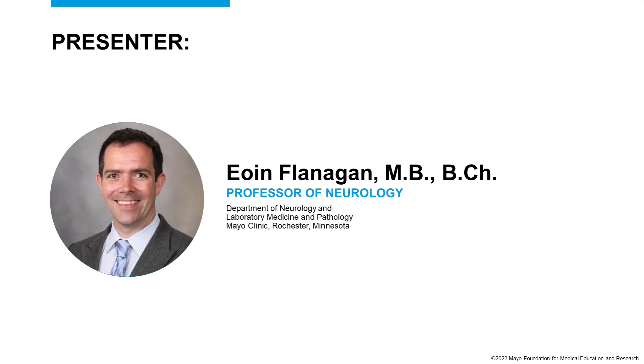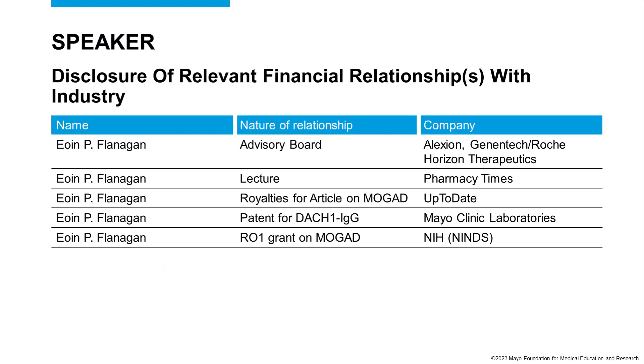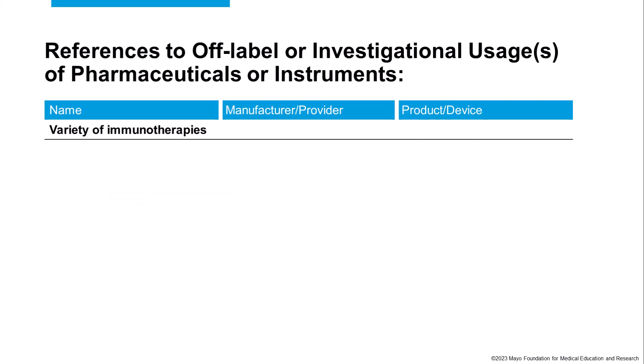Hello everybody. My name is Owen Flanagan. I'm a neurologist at the Mayo Clinic. I work in the Neuroimunology Laboratory at the Mayo Clinic and the Autoimmune Neurology and Multiple Sclerosis Clinics. Today, I'm going to talk about MOG antibody-associated disease, or MOGAD, and in particular about the recent diagnostic criteria. These are my disclosures, which are not too relevant to this talk, which will focus mostly on diagnosis.